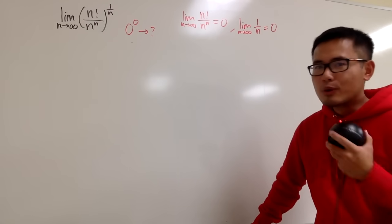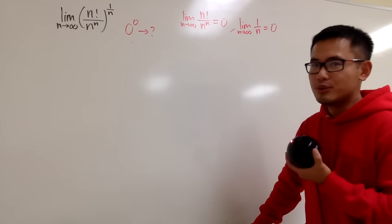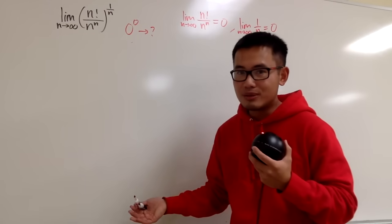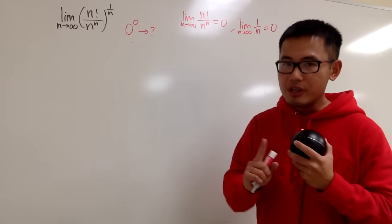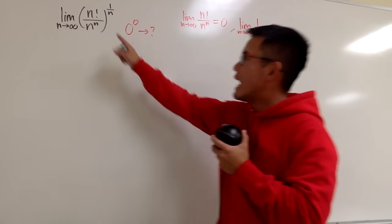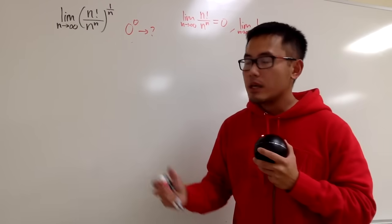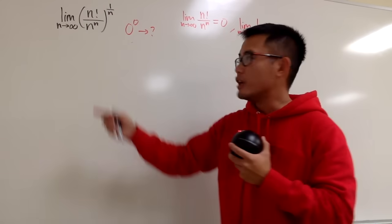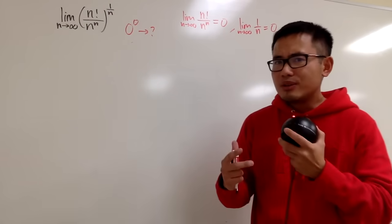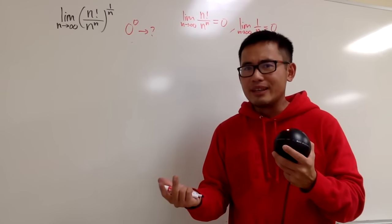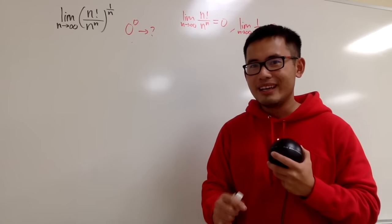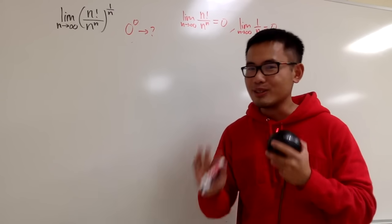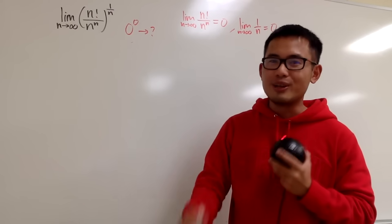Usually our go-to move is to use L'Hôpital's rule to solve limits. However, here we have n factorial — I cannot really take the derivative, even if I change n to x. I don't think I can differentiate x factorial, and of course we are not using the gamma function. So don't go too crazy.